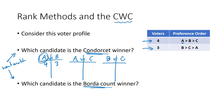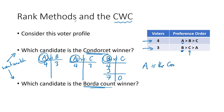In A versus C, the four voters still vote for A. The three voters would prefer B, but since it's A versus C, they vote for their second choice, C. Still, four is more than three, so A beats C. In B versus C, the four voters can't vote for A, so they vote for their second choice, B. The three voters also vote for B, so B wins 7 to 0. A beat both opponents — A beat B and A beat C — so A is the Condorcet winner.